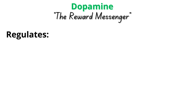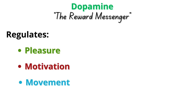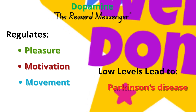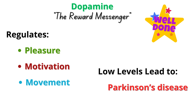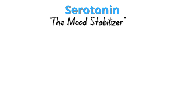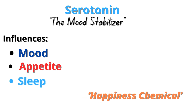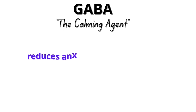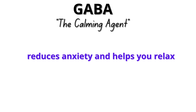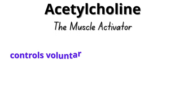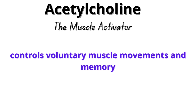Each neurotransmitter has specific functions. Dopamine, the reward messenger, regulates pleasure, motivation, and movement — low levels are linked to conditions like Parkinson's disease. Dopamine is like a gold star sticker for your brain when you achieve something. Serotonin, the mood stabilizer, influences mood, appetite, and sleep, and is often called the happiness chemical. GABA, the calming agent, reduces anxiety and helps you relax — medications like benzodiazepines work by enhancing GABA's effects.